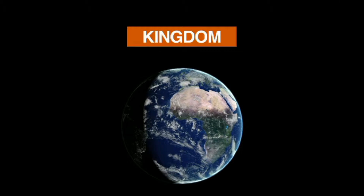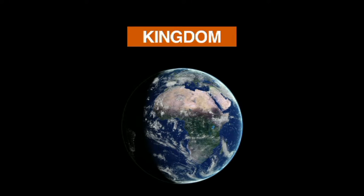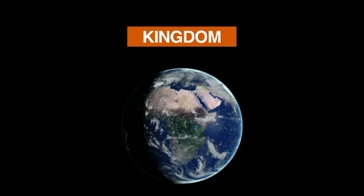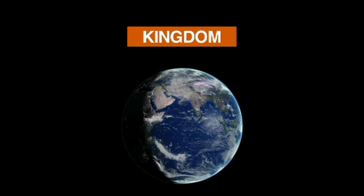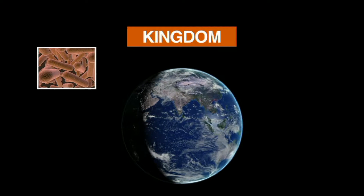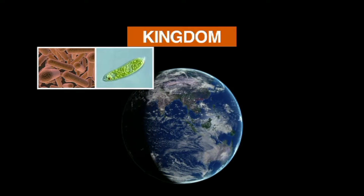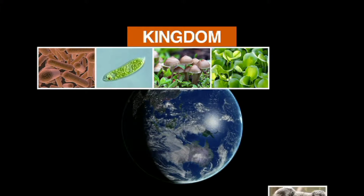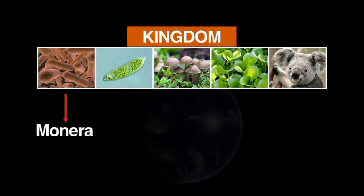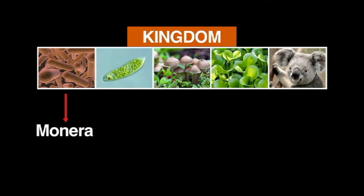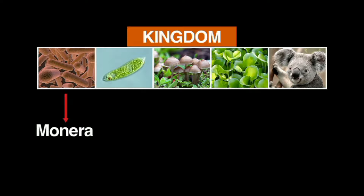Every living creature on Earth belongs to a kingdom. All living things have been divided and classified by today's biologists into five kingdoms or groups. The first kingdom is Monera, made up of all one-cell life forms that have no nucleus, such as bacteria.